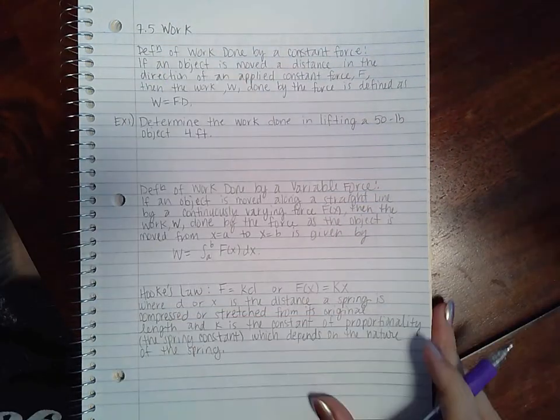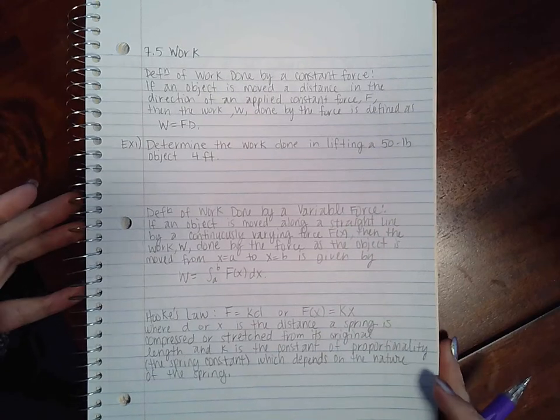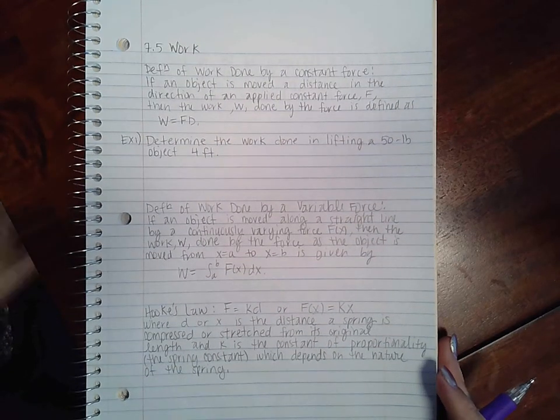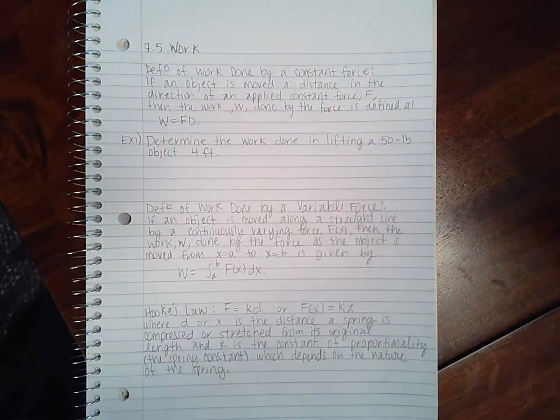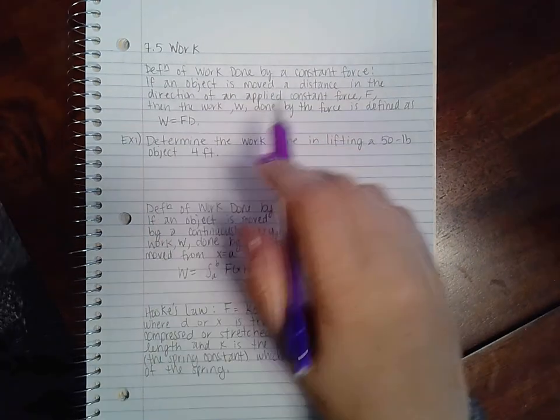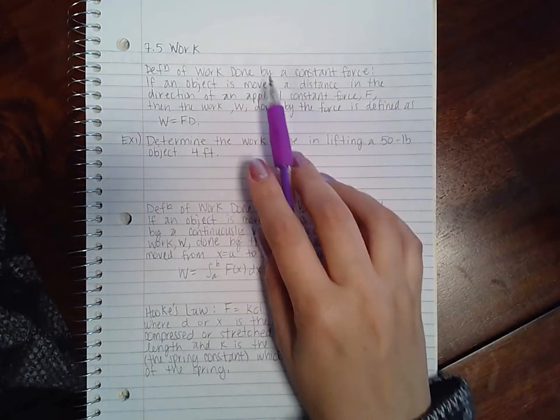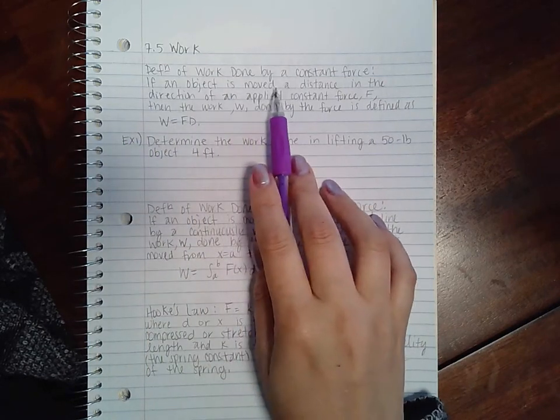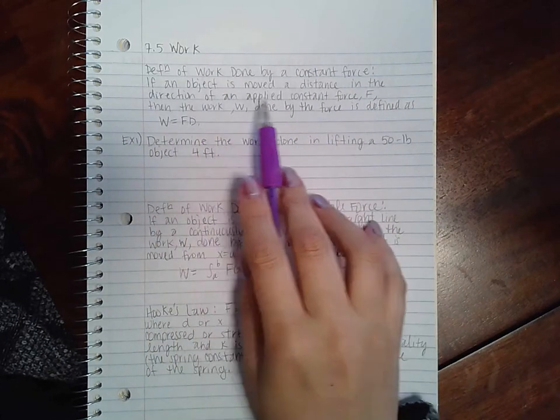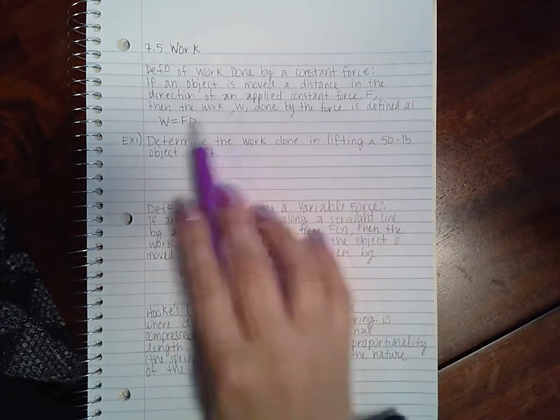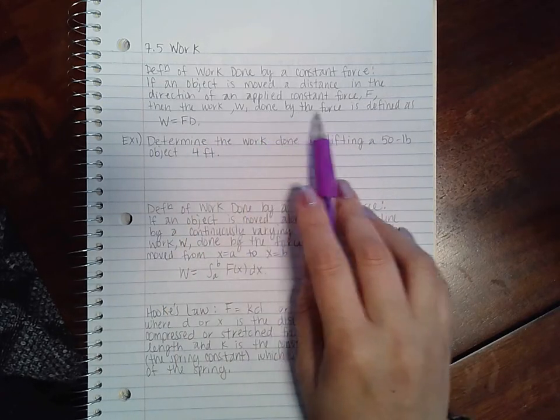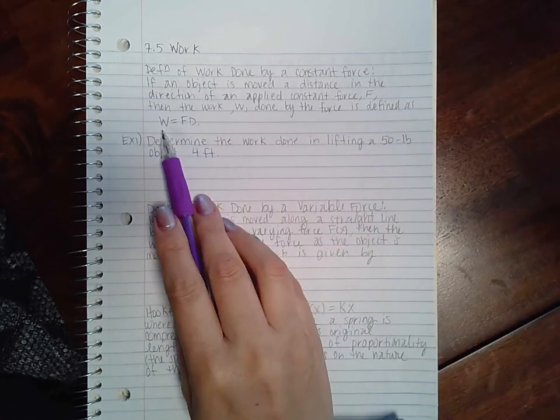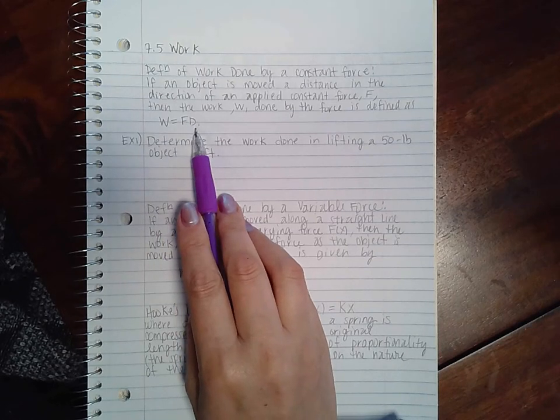In this video we're going to be covering section 7.5, which is the section on work. The definition of work done by a constant force states: if an object is moved a distance in the direction of an applied constant force F, then the work W done by the force is defined as W equals F times D.